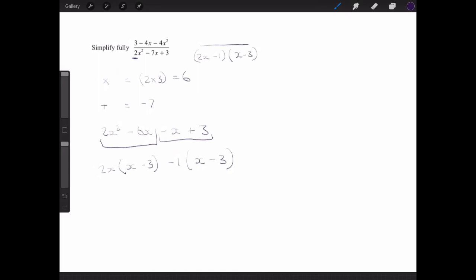So the first thing I'm going to do, I'm going to rewrite it in the format of ax squared plus bx plus c, because that's the way we're used to. So I've got negative 4x squared minus 4x plus 3.